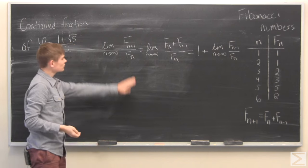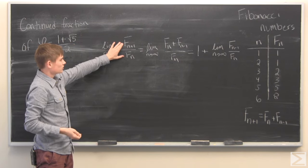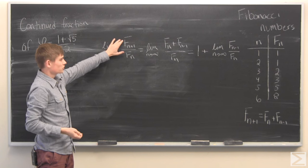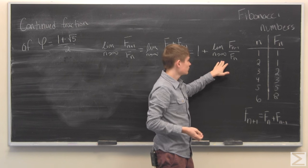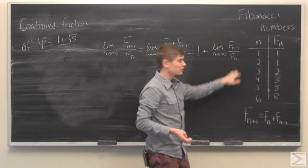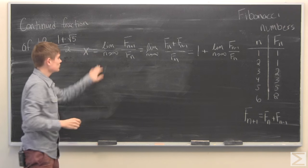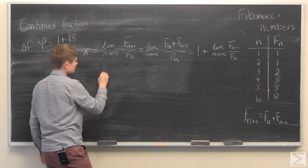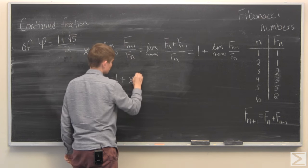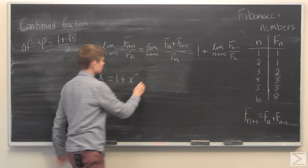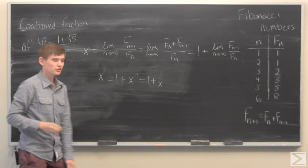Now you see that this is the limit of the consecutive Fibonacci numbers with the larger one on top. And this is the limit of consecutive Fibonacci numbers with the larger number on the bottom. If we define this limit equal to x, we can say that x is equal to 1 plus the inverse of x, which is just 1 plus 1 over x.